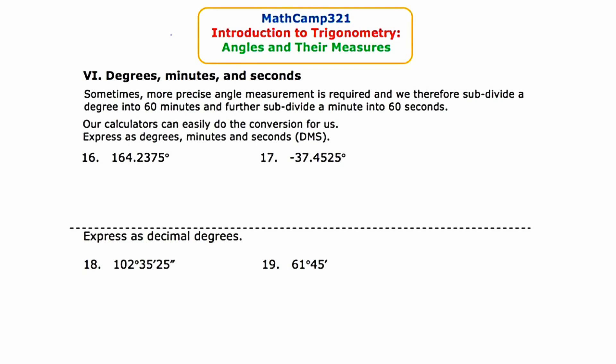Before we get started doing some basic conversions with the use of our calculator, I want to give you the symbols for both minutes and seconds. 1 degree is equal to 60 minutes, and that little tick mark means minutes. In 1 minute there are 60 seconds, and seconds takes a double tick mark.